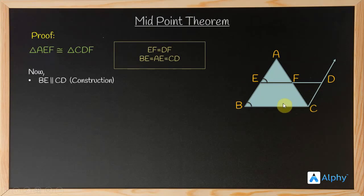Next, BE is parallel to CD according to the construction as we did initially. Also BE is equal to CD as we have already proved here. Now if you remember one property that we have proved in the previous lecture, that if a pair of opposite sides are equal and parallel to each other, then the quadrilateral is a parallelogram.